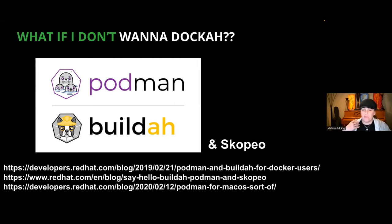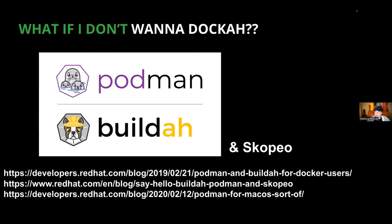There are other ways as well. There's Jib, a Google container tool that optimizes images without the Docker daemon versus building a single layer with the application JAR — there's a Jib Maven plugin and a Jib Gradle plugin. Then there are other tools like Bazel, a Google tool, and Kaniko, another tool you can use to build images in your Kubernetes clusters. So there are lots of tools out there now.